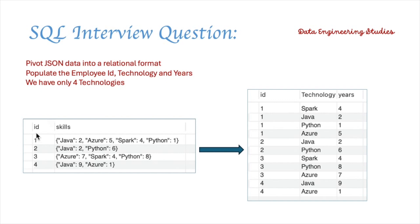We have an employee table which has two columns: ID and skills. The ID is an integer and the skills column is in JSON format. In the JSON key we have different technology names, and in the JSON value we have the number of years of experience.